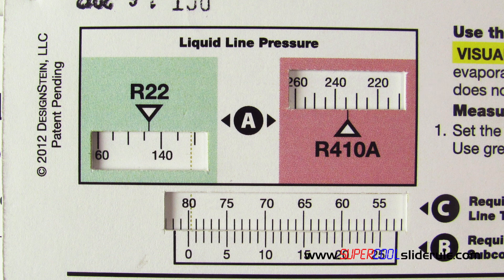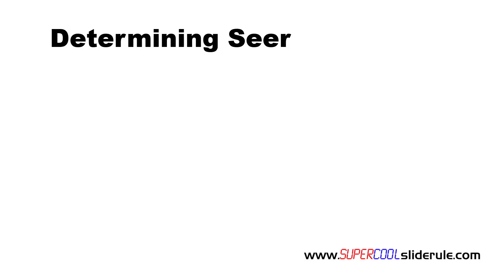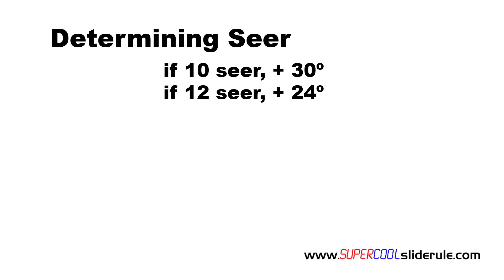Referencing a temperature pressure chart will give the same answers. Next, we are going to use an educated guess as to the efficiency of our equipment. If our equipment is 10 SEER, we will add 30 degrees to our ambient temperature. If it is 12 SEER, we are going to add 24 degrees. And if it is 14 SEER, we will add 20 degrees.